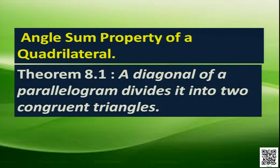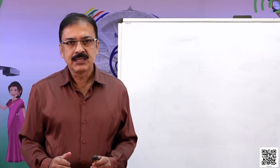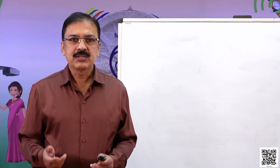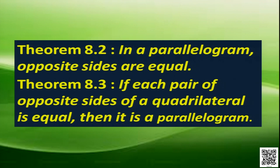A diagonal of a parallelogram divides it into two congruent triangles. Another property is that in a parallelogram, opposite sides are equal — each pair of opposite sides is equal. And its converse is also true: if each pair of opposite sides of a quadrilateral is equal, then it is a parallelogram.